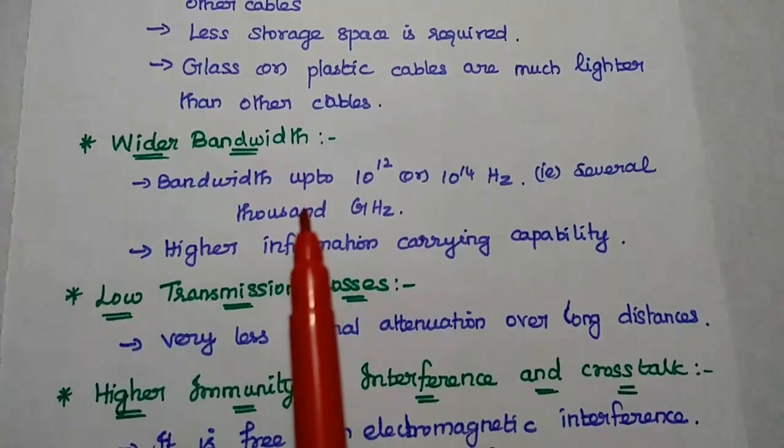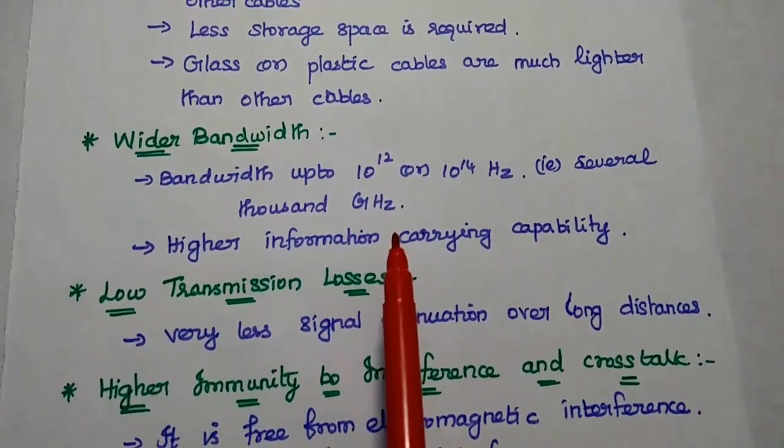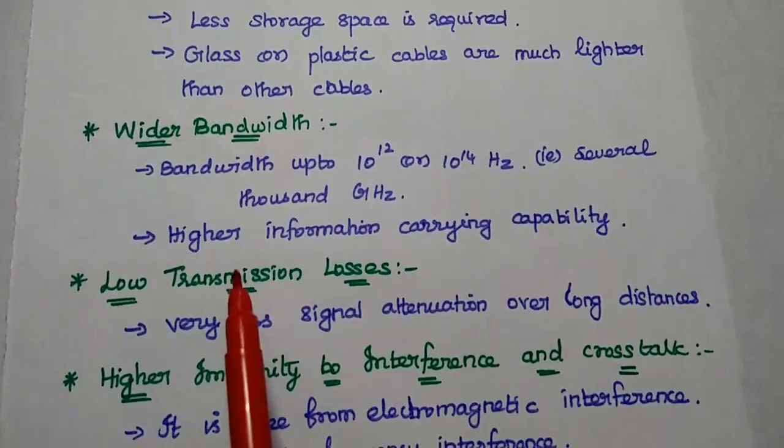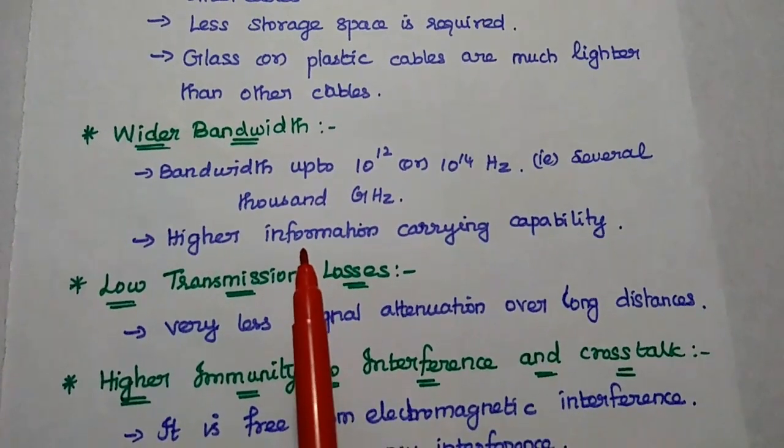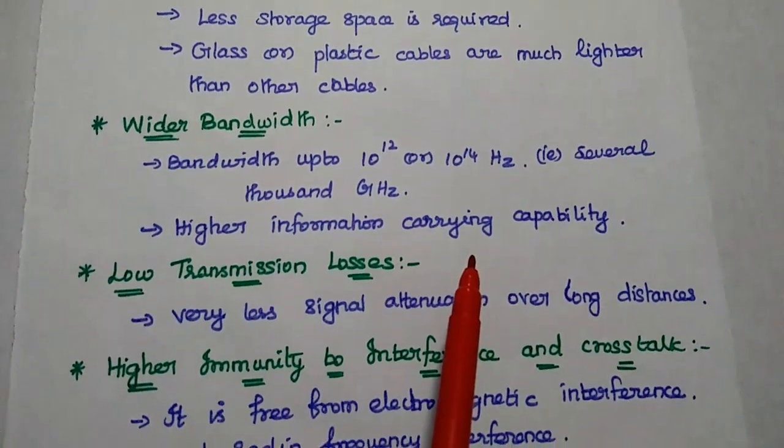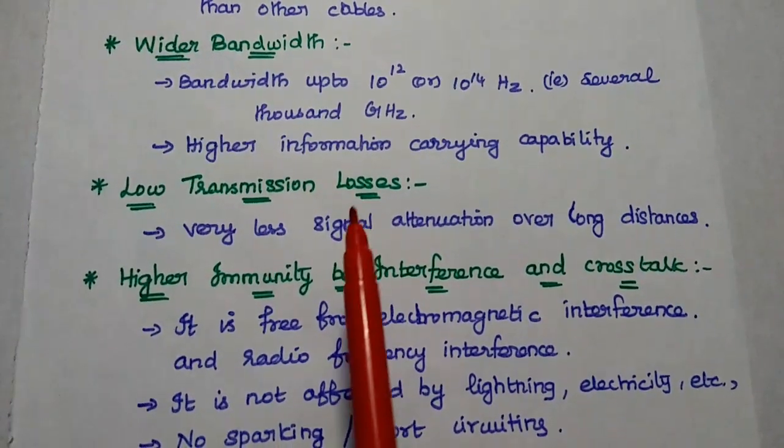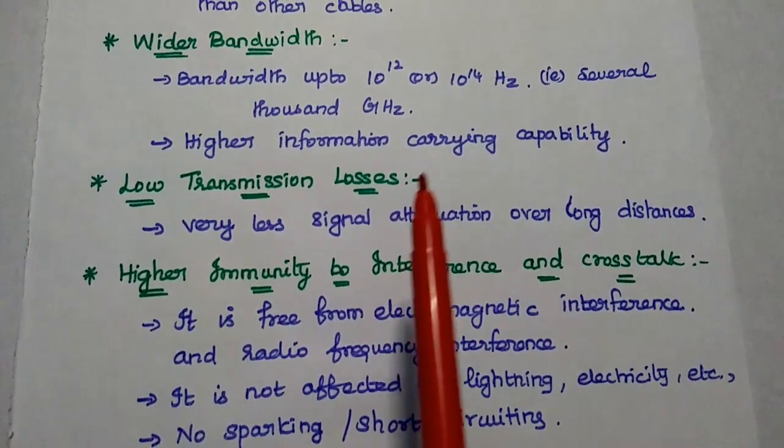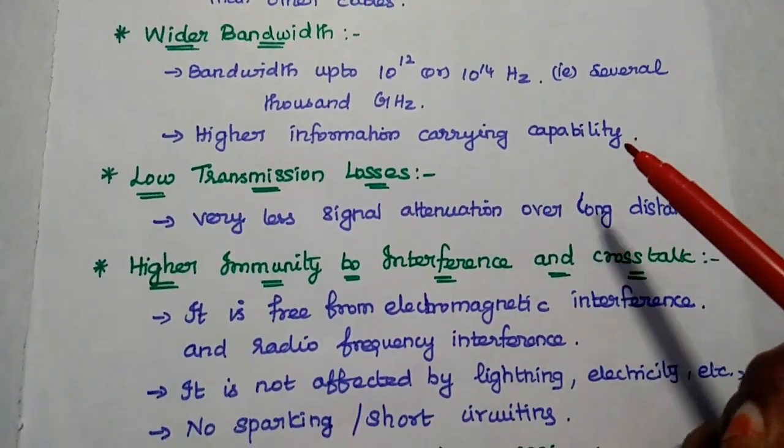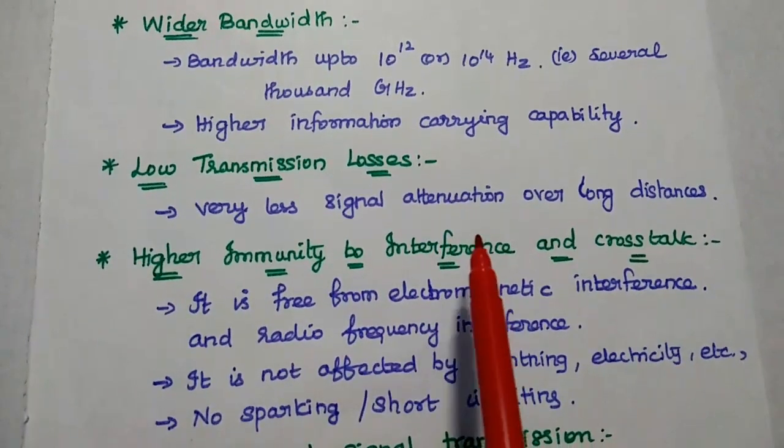Next advantage is wider bandwidth. Here it can cover several thousand gigahertz range. Bandwidth is wider, so it provides very high information carrying capacity. It can speed up the operation, providing very high speed operation to carry large amount of data at a time. Next one is low transmission losses.